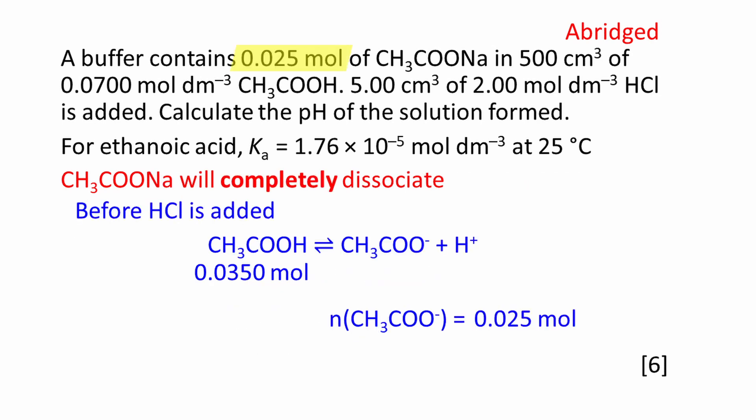Sodium ethanoate, CH3COONa, will completely dissociate. We're given the amount of sodium ethanoate in the question. Before the HCl is added, there are 0.025 moles of CH3COO- ions present in the buffer solution.